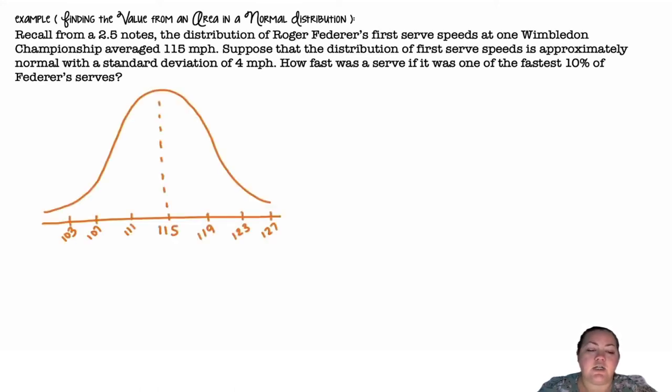So I'm going to draw my normal distribution and label it. I want to be in the top 10% of serves. So the area would be 0.10. I'm shading the top. The fastest ones will be higher miles per hour. I don't know the value where it starts at, so I'm labeling that with a question mark.